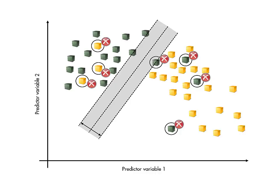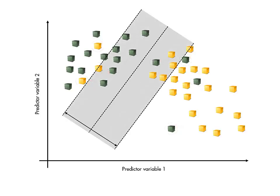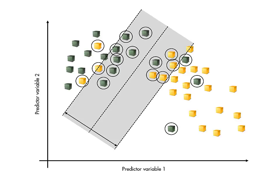Note that observations are correctly classified only if they lie on the correct side of the margin. So the penalty term prevents a solution that cheats by having a huge margin.